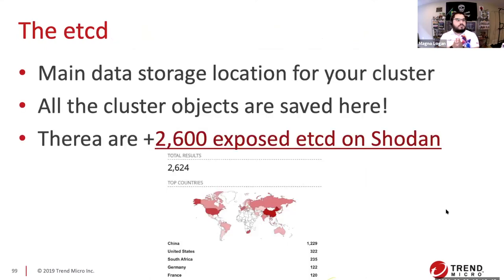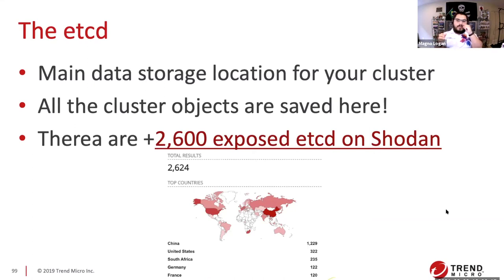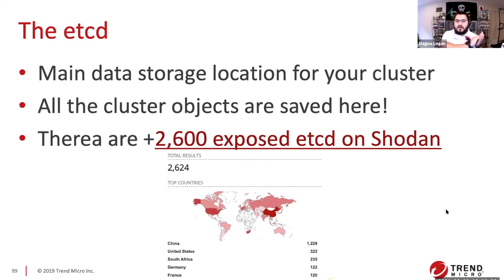etcd is the heart of your cluster — it's the key-value store, the database where all Kubernetes cluster objects are saved. There are still scenarios where etcd is exposed to the internet, and you absolutely don't want that. etcd has an API, and if attackers can reach it, they can essentially become cluster admin — they can change the desired state, deploy privileged pods, access all secrets, and do basically everything. We did research a few months ago and found over 2,600 exposed etcd instances on Shodan alone.